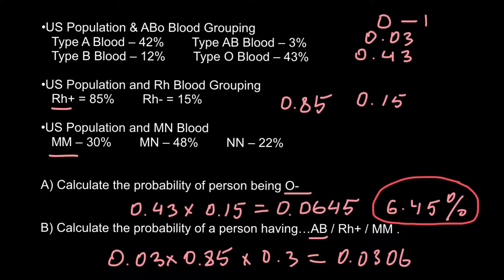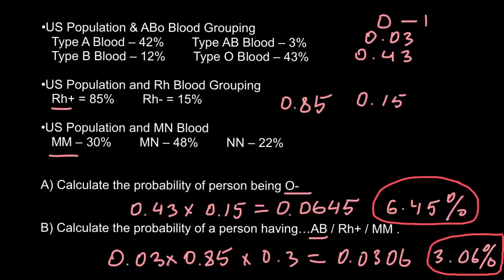If we need the answer in percentage form, we multiply by 100 or move the decimal point two places to the right, giving us approximately 0.765%. That is our answer for the second question. And that is all for today — thank you for your attention.